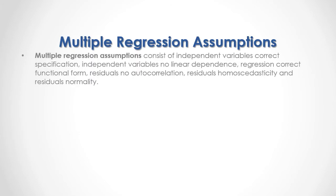Multiple regression assumptions consist of independent variables' correct specification, independent variables' no linear dependence, regression correct functional form, residuals' no autocorrelation, residuals' homoscedasticity, and residuals' normality.